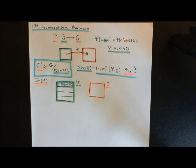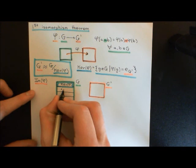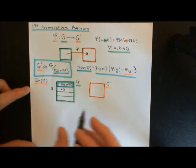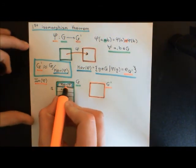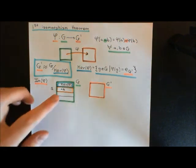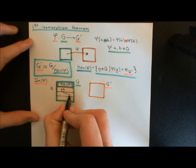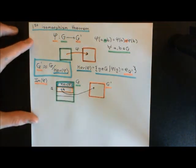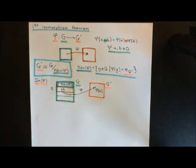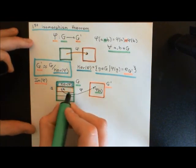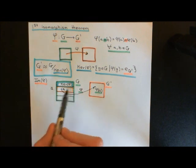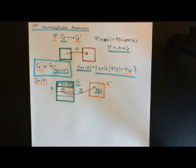To prove this, take an arbitrary coset of the kernel of the homomorphism. This coset will contain at least one element — call that element little a, and therefore call the entire coset a-bar. I want to show that all elements in this coset a-bar are all mapped onto the same element in G prime as little a. Little a will be mapped onto some element which we can denote phi of a, and we want to show that all other elements in coset a-bar are also mapped onto phi of a.